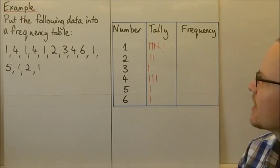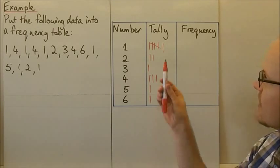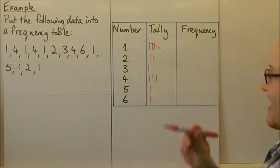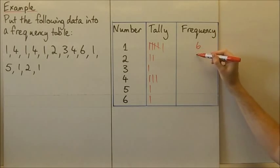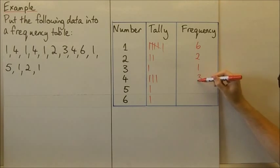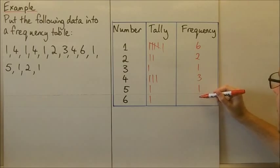If we just count up the numbers now, we can look at our tally. We've tallied six there for our first one, two for two, one for three, three for four, one for five, and one for six.